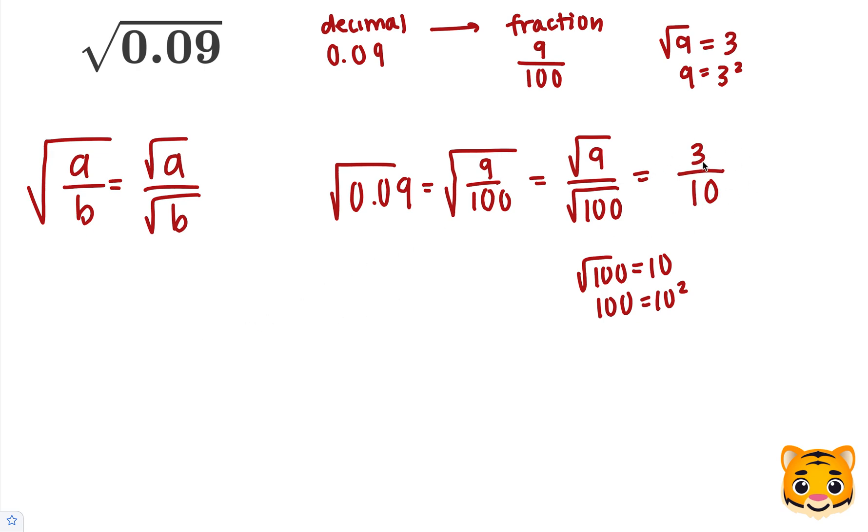However, we can also write this fraction as a decimal. 3 tenths as a decimal would be 0.3. So, to answer our question, the square root of 0.09 is equal to 3 tenths or 0.3.